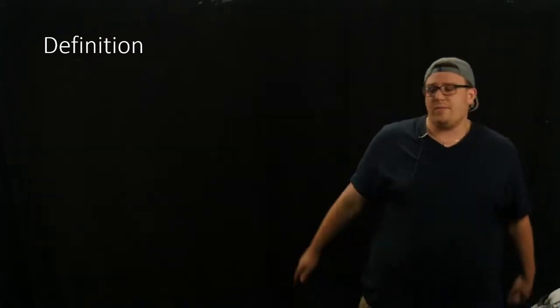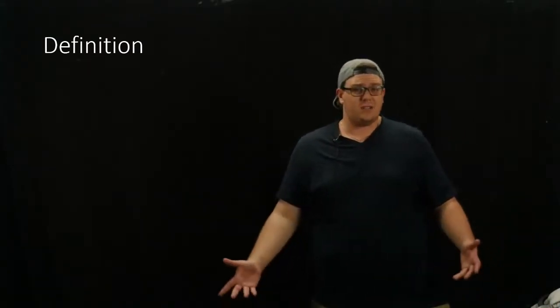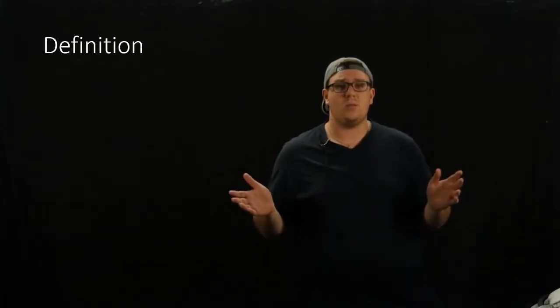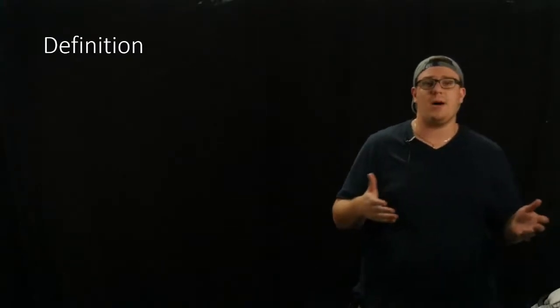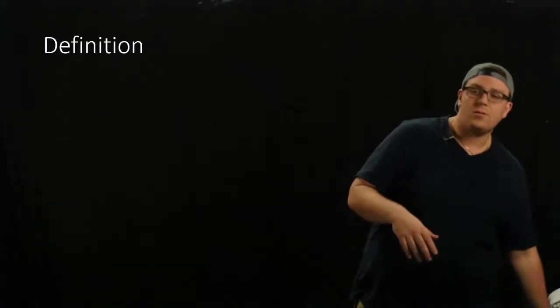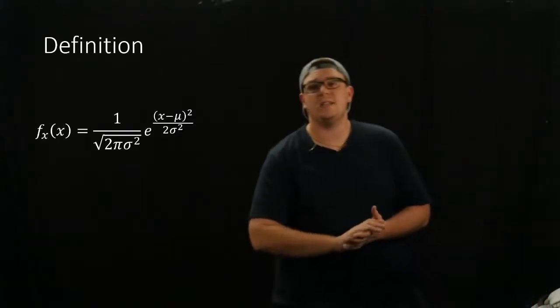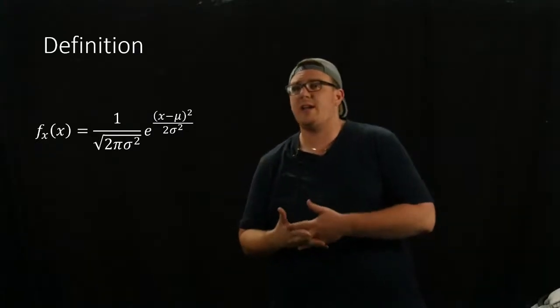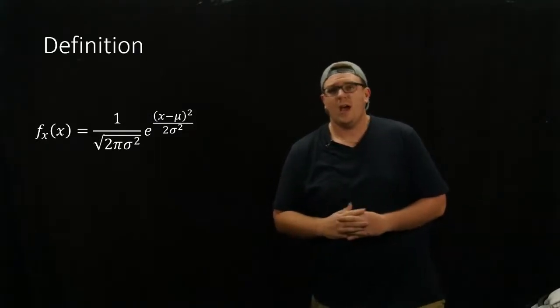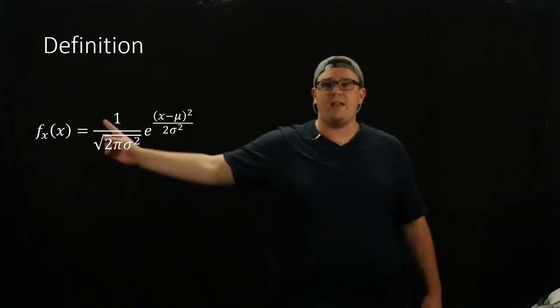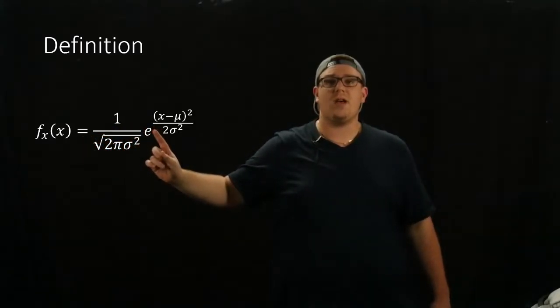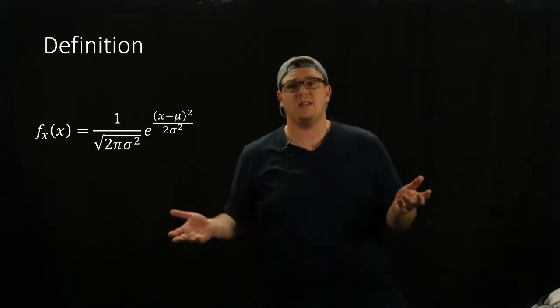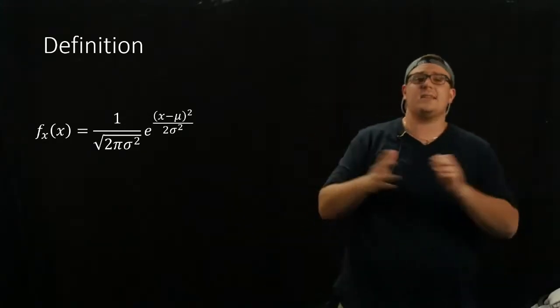First we're going to define what the random variable is. The thing that defines random variables is their probability density functions, which basically says for what value of x, what is the probability that that value of x will come up. The probability density function for x says that f_x(x) is equal to 1 over the square root of 2π σ² times e to the negative (x minus μ)² over 2σ². So for any value x, you plug it into this formula and it tells you the probability of getting that x, if x is distributed as a Gaussian random variable.